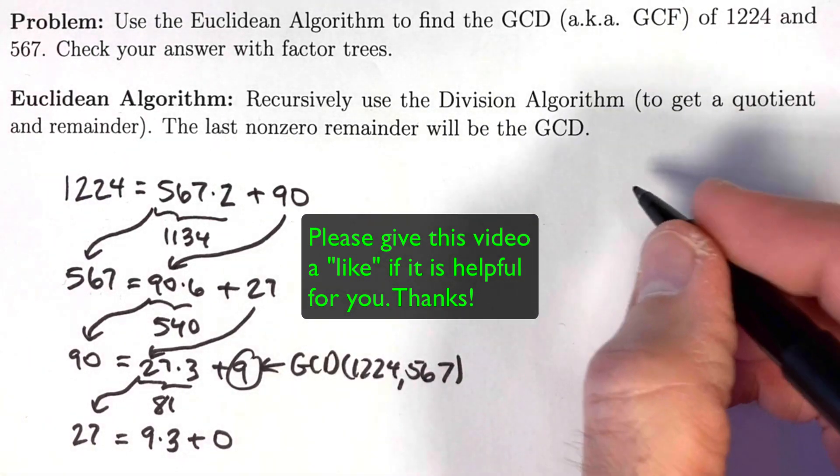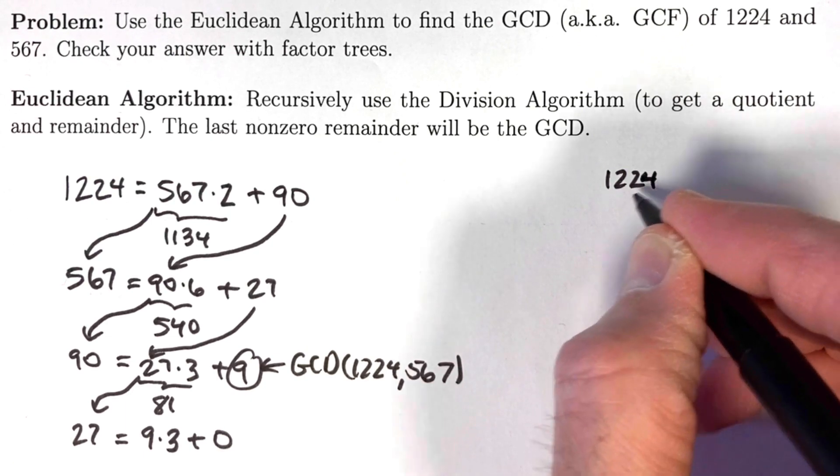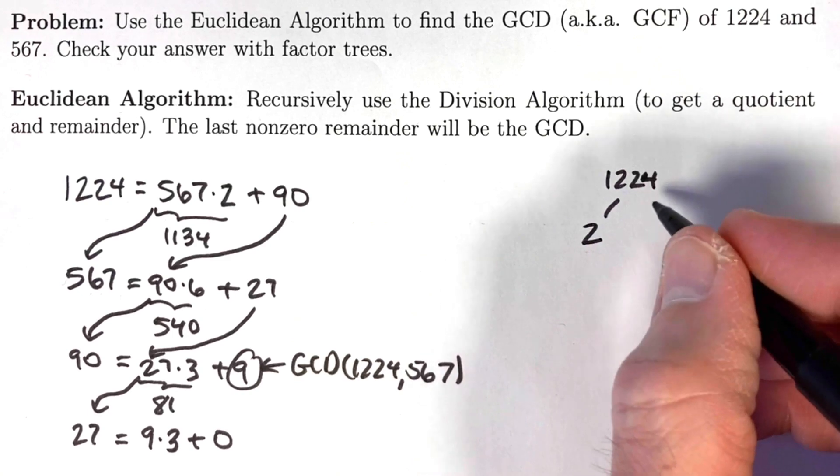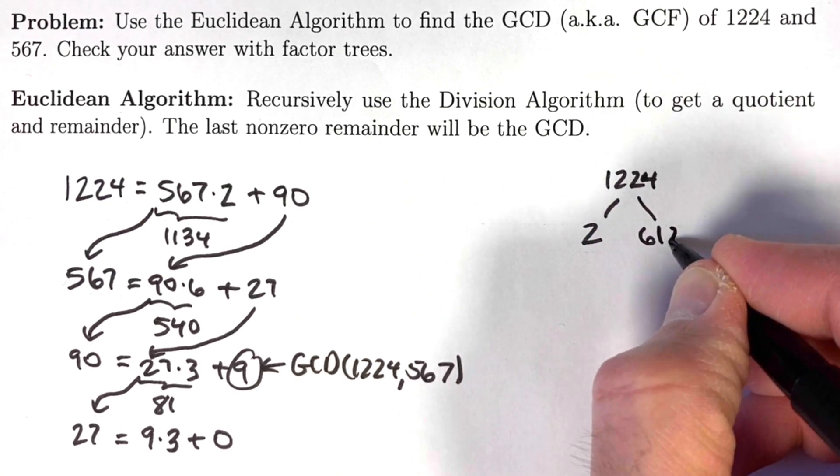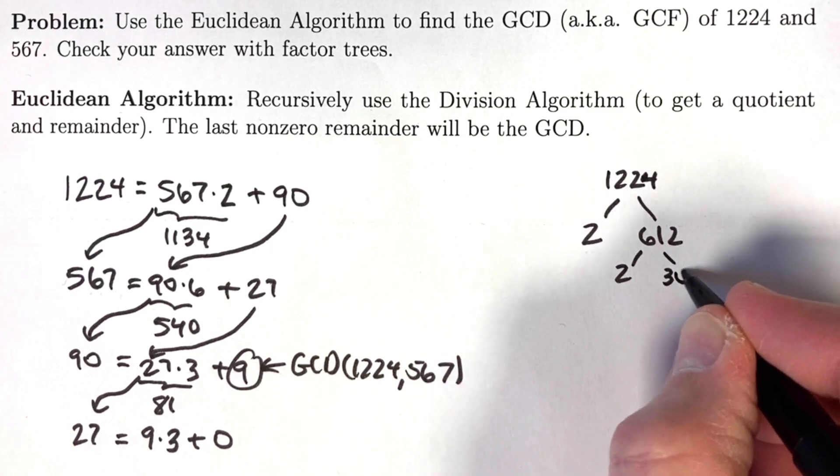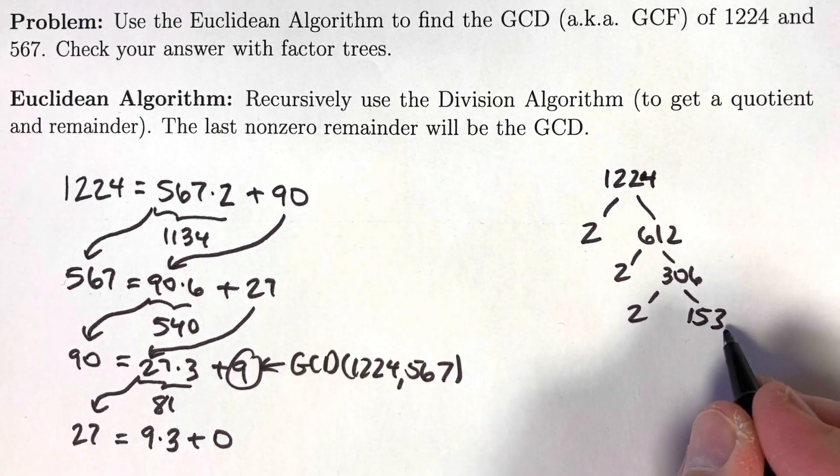Now let's check the answer with factor trees. Take 1224. First notice it's an even number. It's divisible by 2. It's 2 times 612. That is also an even number. It's 2 times 306. That's also even. It's 2 times 153. Now that's an odd number, but it is divisible by 3.